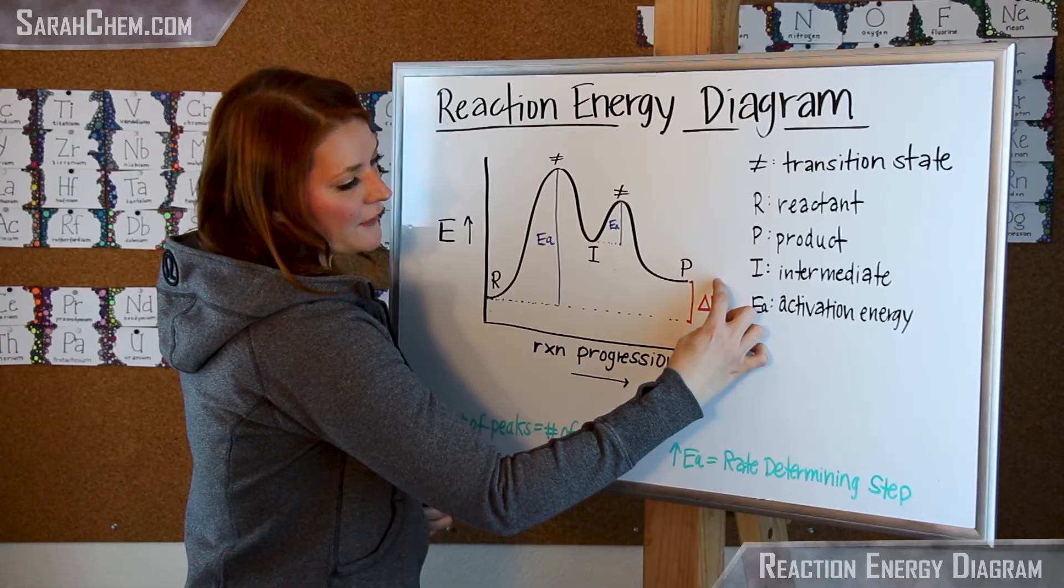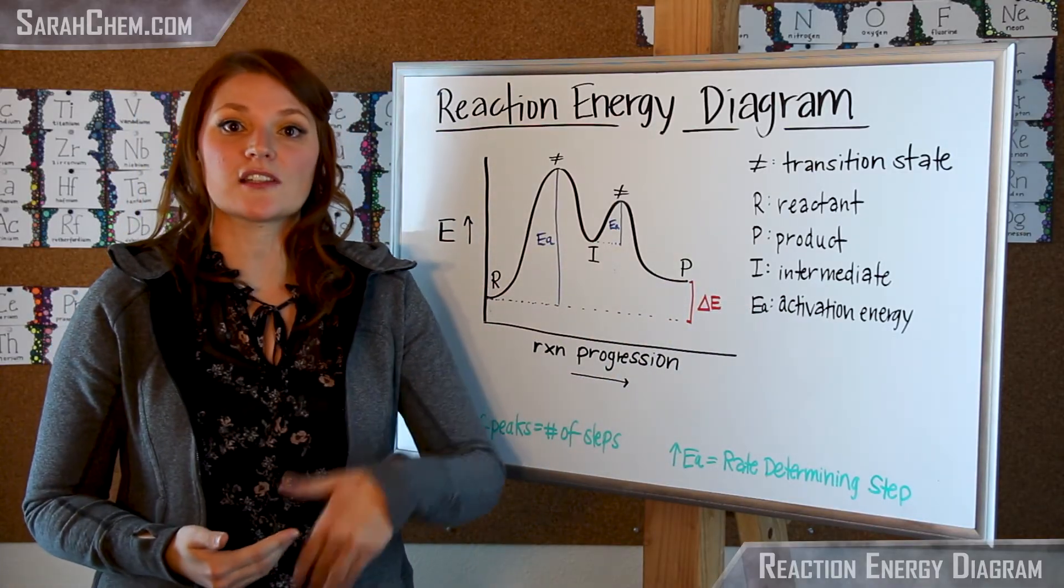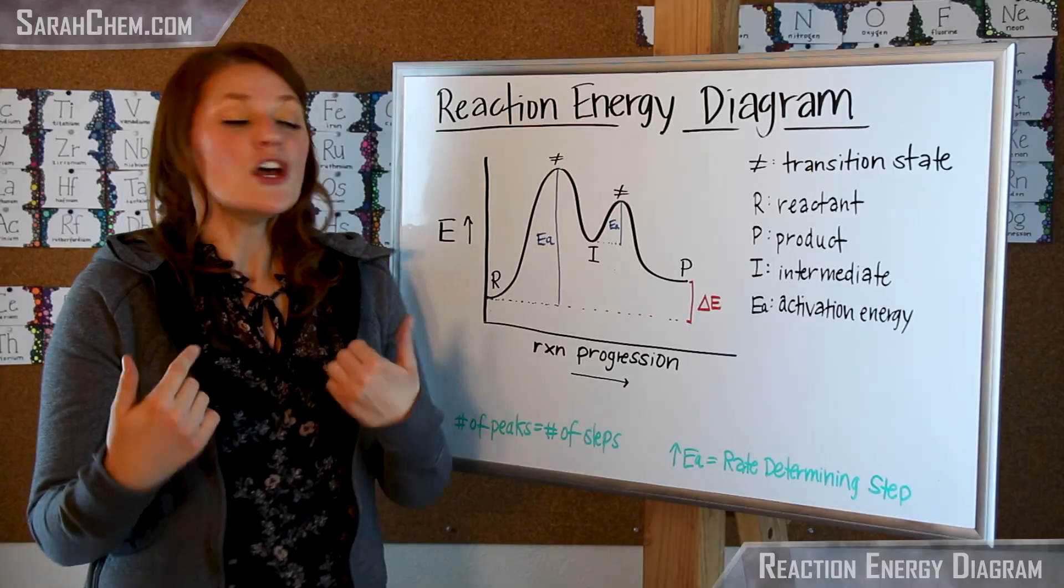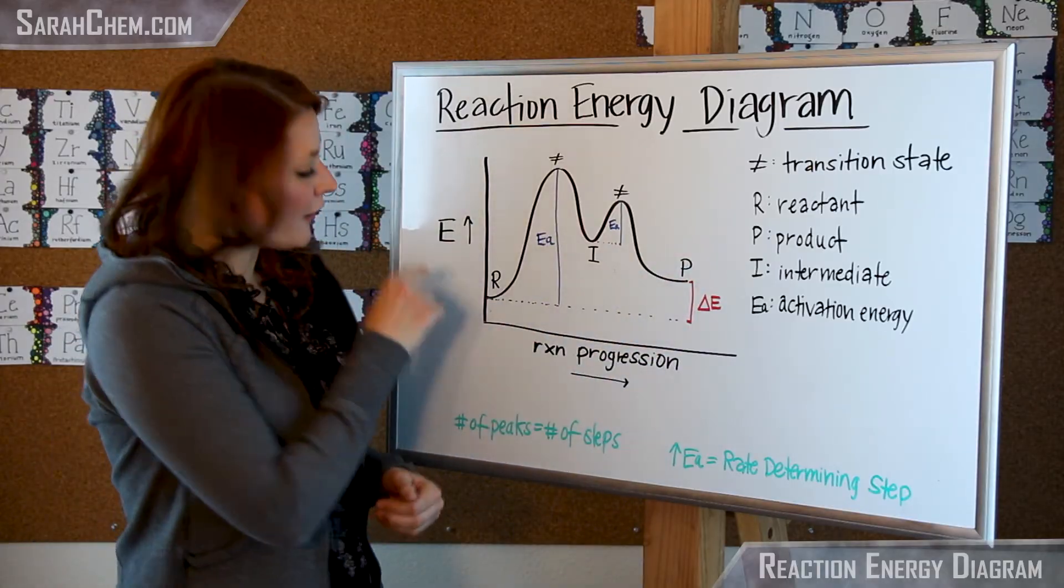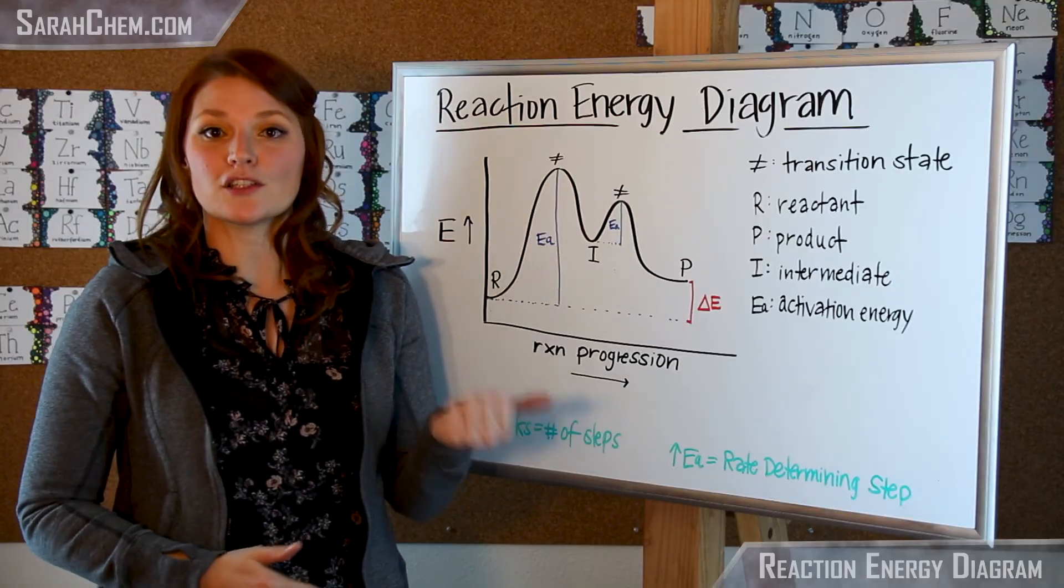Lastly, we can also figure out the difference in energy between the product and reactant, and that can tell us whether our reaction is exothermic or endothermic. In this case, because our product is higher energy than our reactant, we understand that that means that this is going to be an endothermic reaction.